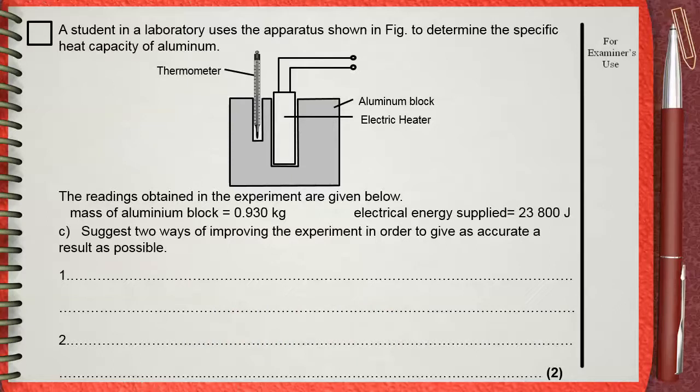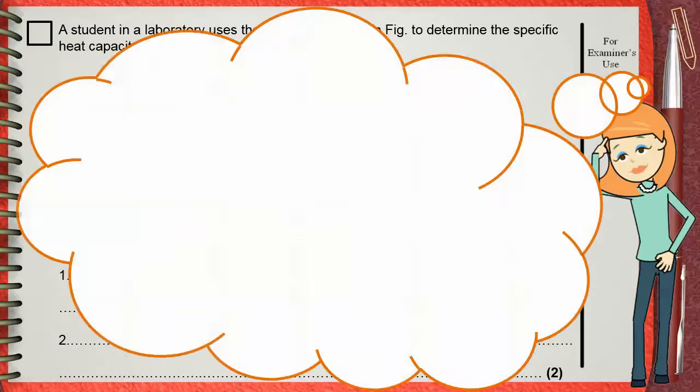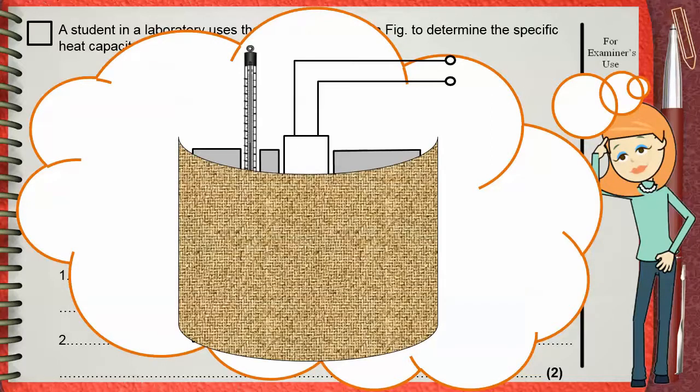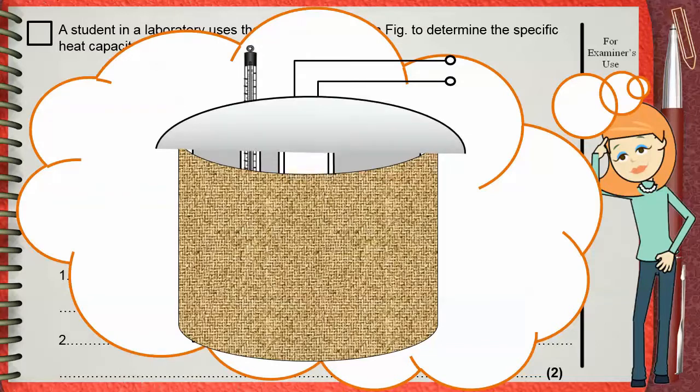You must minimize as much as possible the amount of heat loss. The first thing is you can insulate the sides with any insulating material. Another thing is that you can add a lid to prevent heat loss by convection.